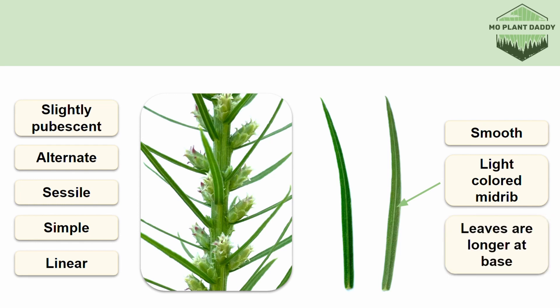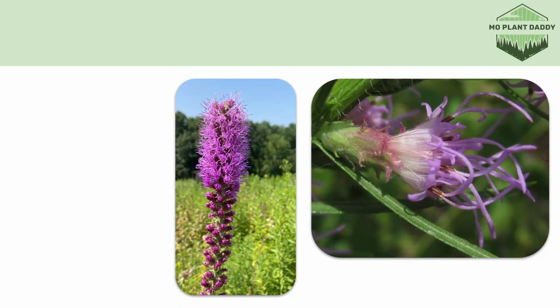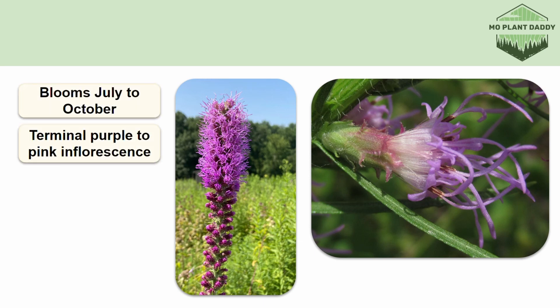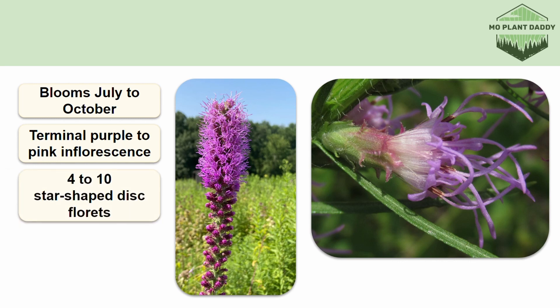The leaves may also be slightly pubescent depending on the plant. Additionally, the leaves at the base of the plant will be longer than those at the top. Some mammals such as rabbits and deer will feast upon the foliage of gay feather. Gay feather blooms July to October and produces a long terminal purple to pink inflorescence containing many sessile cylindrical flower heads.